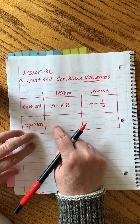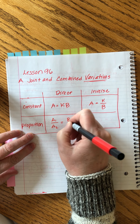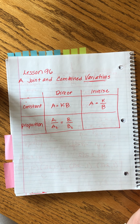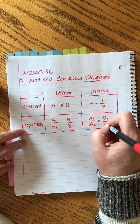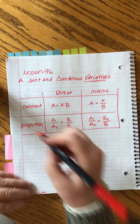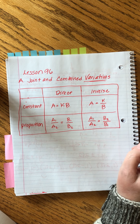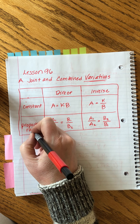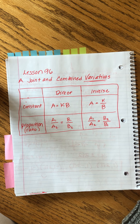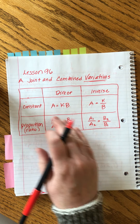We've talked about variations several times before. This lesson is just expanding on what we know. There are two kinds: direct variations — like the number of toddlers in a room varying directly with the number of toys — and inverse variations, like more dads walking in meaning fewer slices of pizza left. There are two sets of formulas: the constant method and the proportion method.